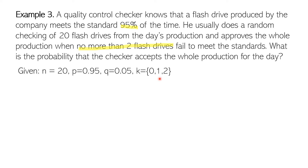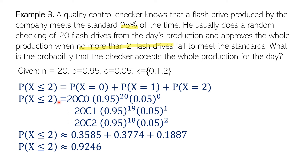K equals 0 means all flash drives passed quality standards. K equals 1 means one failed. K equals 2 means two failed the quality control. That is what 'no more than two flash drives' means — at most 2 — so we add the probabilities for X equals 0, X equals 1, and X equals 2.